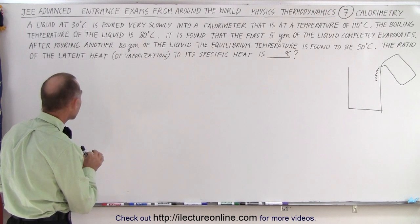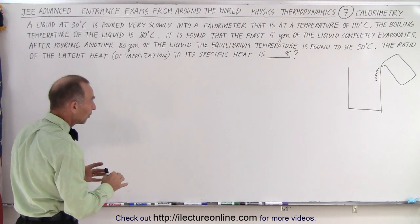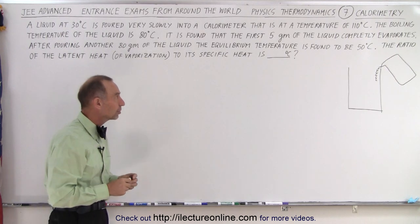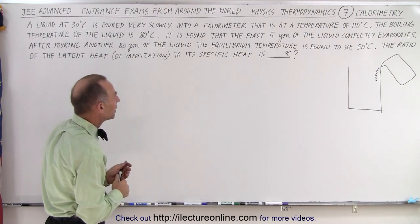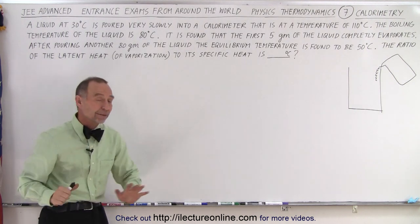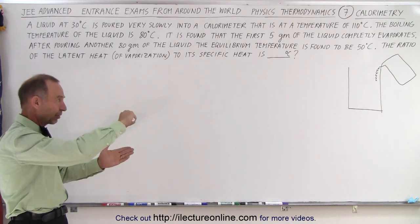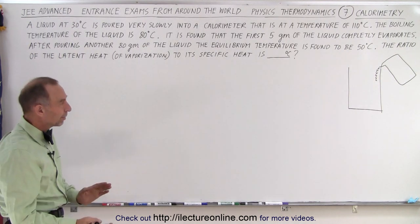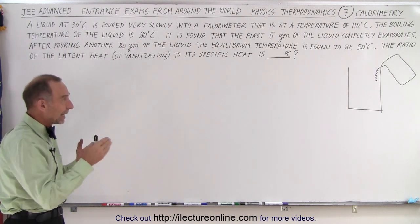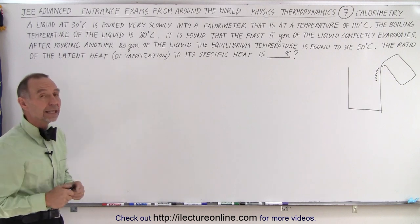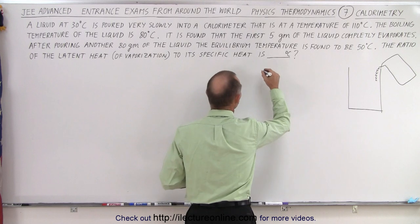The ratio of the latent heat of vaporization to its specific heat is—wait a minute, it's a ratio, isn't it? I don't know why we need degrees centigrade there, but we'll find out if that's needed or not. So I have a little picture: there's a calorimeter, we're pouring some liquid in there, and two things happen. The first 5 grams evaporate, after that the next 80 grams causes everything to be in an equilibrium temperature of 50 degrees centigrade. Which means there's two parts to this.